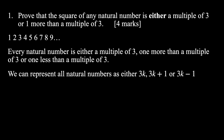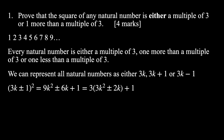We can represent all natural numbers as either 3k, 3k+1, or 3k−1. Let's consider the cases where we have a number one more or one less than a multiple of three — we can do those in one go. We write (3k ± 1)² and expand: that gives 9k² ± 6k + 1. The plus one is always there regardless of the sign. Factorizing three out of the first two terms gives 3(3k² ± 2k) + 1. This expression represents a multiple of three plus one, so it's always one more than a multiple of three.